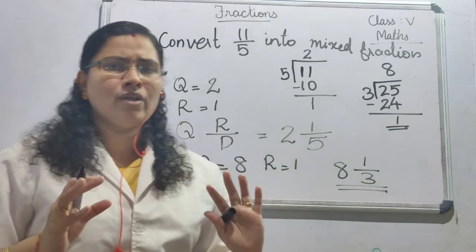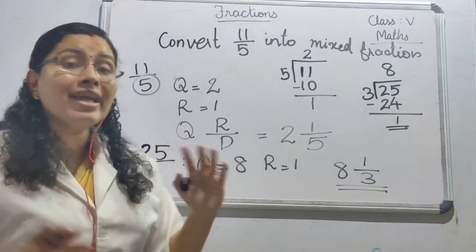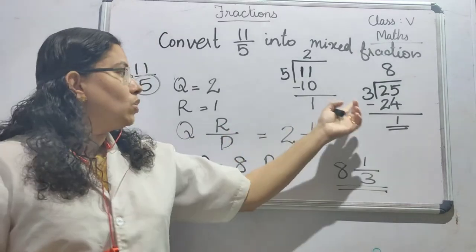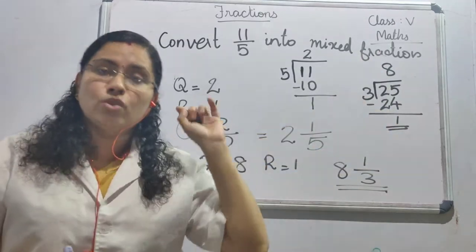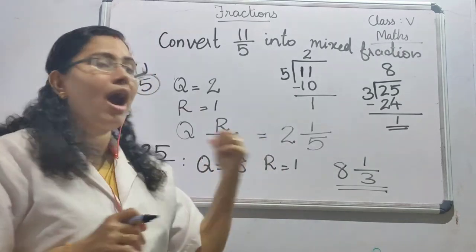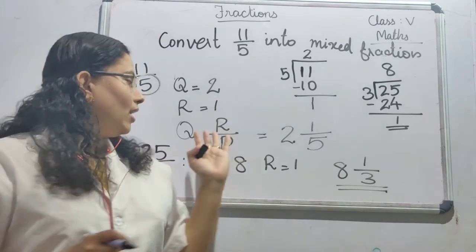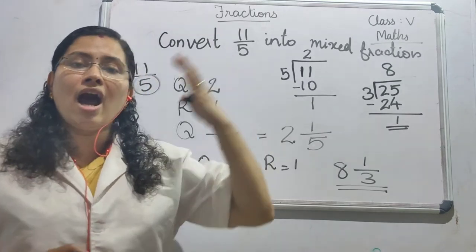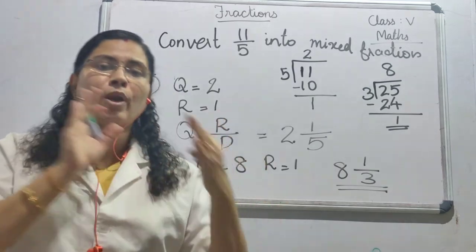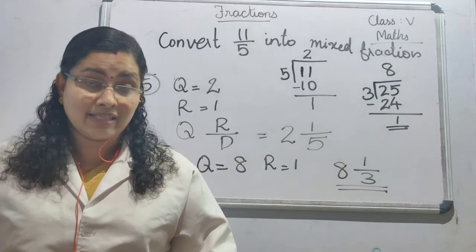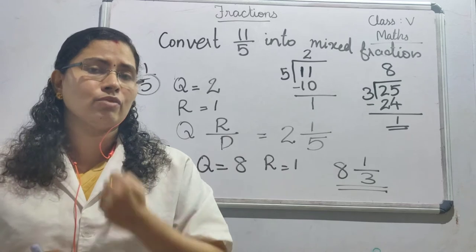So when you have an improper fraction, you can convert it into mixed fraction form. Divide the numerator by the denominator to get a quotient and a remainder. Then write it in the form of Q R D, where Q is the quotient, R is the remainder, and D is the divisor. Q becomes the whole number part and R/D becomes the proper fraction part. We can also convert a mixed fraction into an improper fraction, which we will learn now.